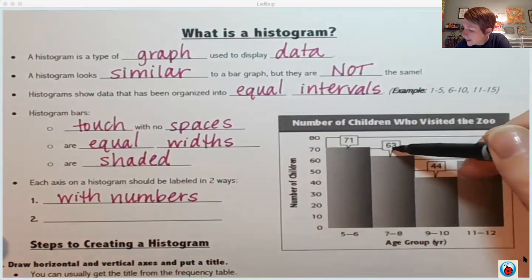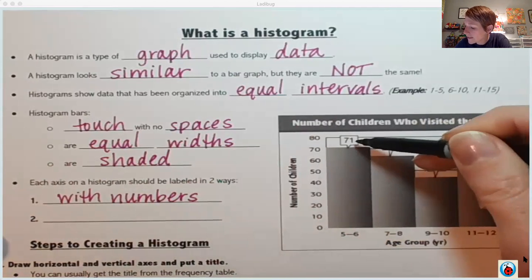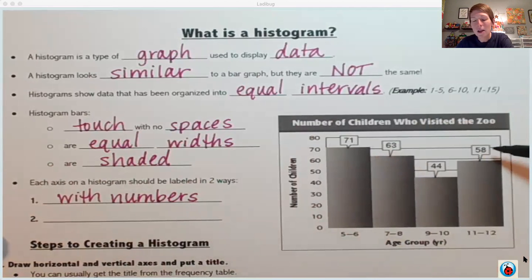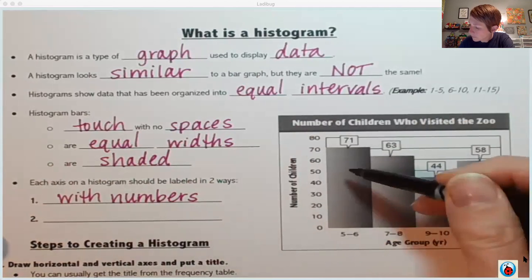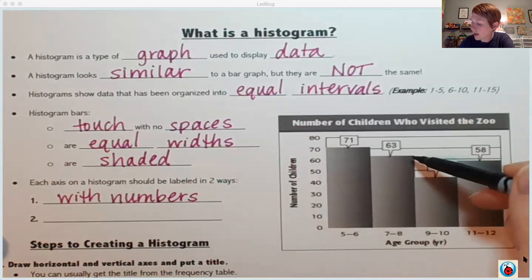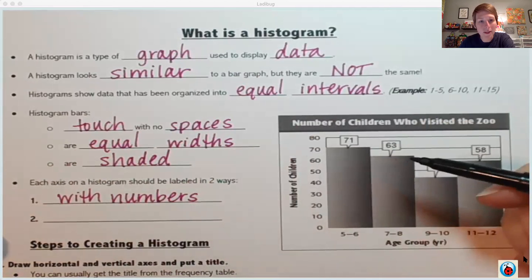This one counted by 10. So in order to help specify where each of their bars stopped, they put these little numbers at the top. Those little numbers won't always be there. Usually you'll be able to tell based on the line the bar stops at which number it represents.